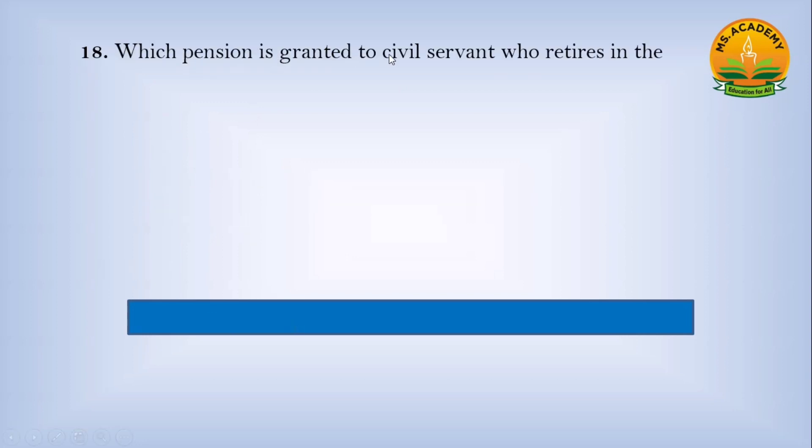Which pension is granted to civil servant who retires at the age of sixty? Option a) Invalid, Option b) Compensation, Option c) Superannuation. Answer: c - Superannuation.